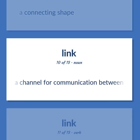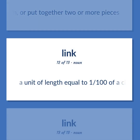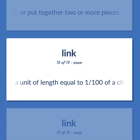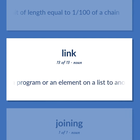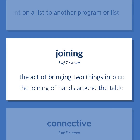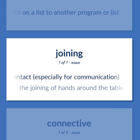Link (continued): A channel for communication between groups. Connect, fasten, or put together two or more pieces. A unit of length equal to one one-hundredth of a chain. Computing — an instruction that connects one part of a program or an element on a list to another program or list. The act of bringing two things into contact, especially for communication — the joining of hands around the table. An instrumentality that connects.